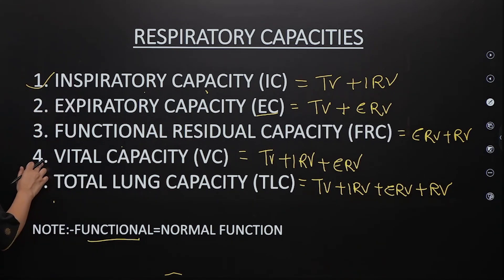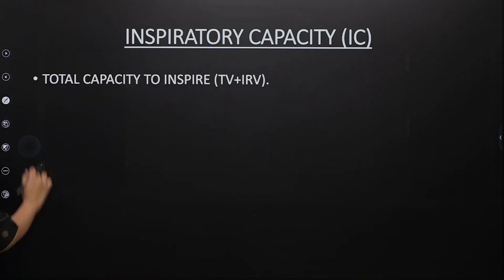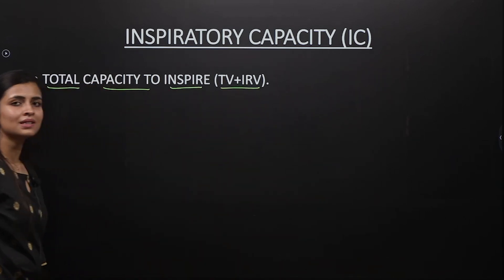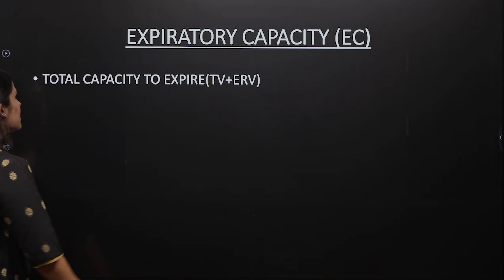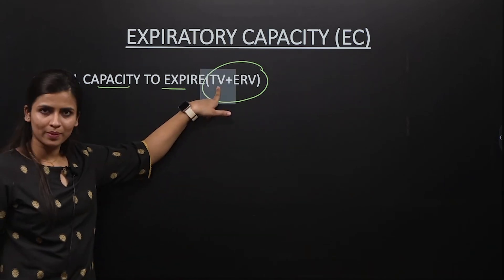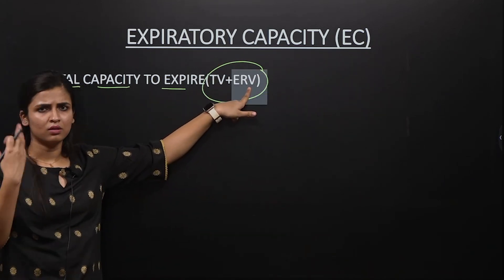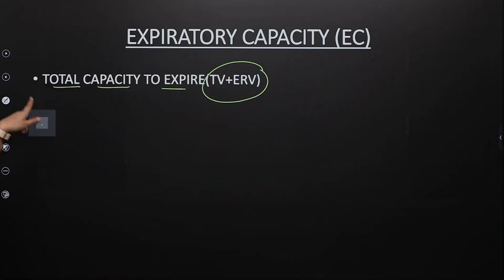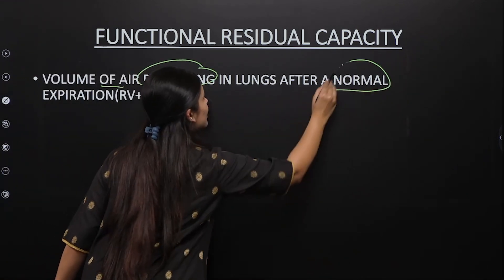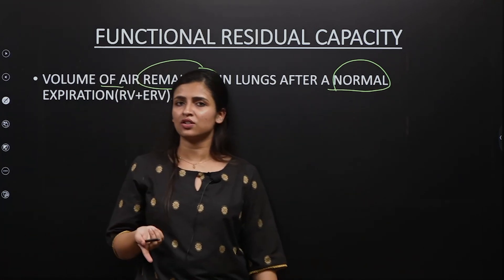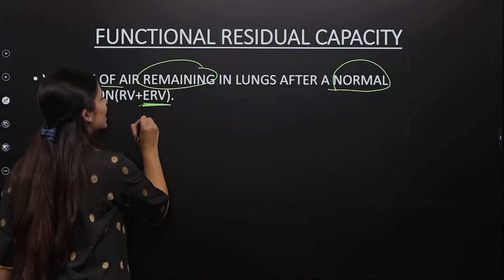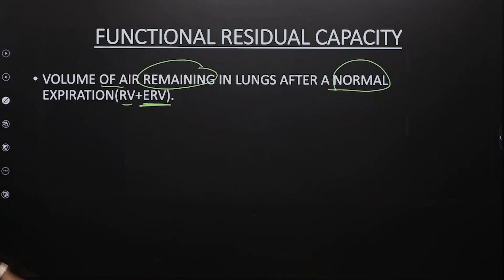Let us write each one quickly. Inspiratory capacity is the total capacity to inspire, equals TV plus IRV. Expiratory capacity is the total capacity to expire, equals TV plus ERV — we expire TV normally and ERV during forced expiration. Functional residual capacity is the volume of air remaining in the lungs after normal expiration; after forced expiration only RV remains, but after normal expiration RV plus ERV gives the FRC.